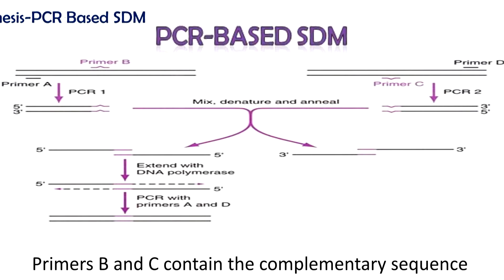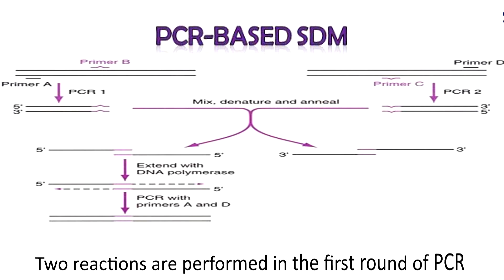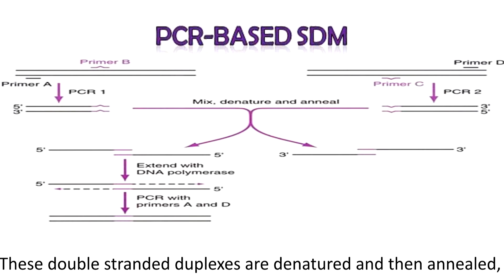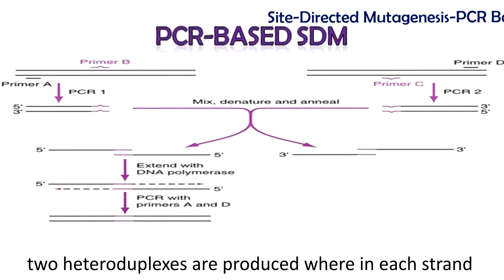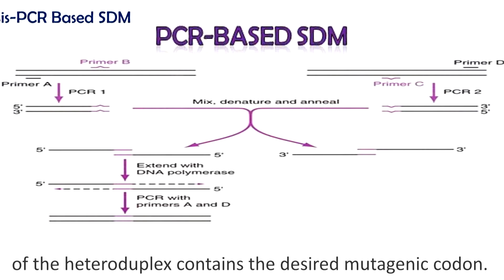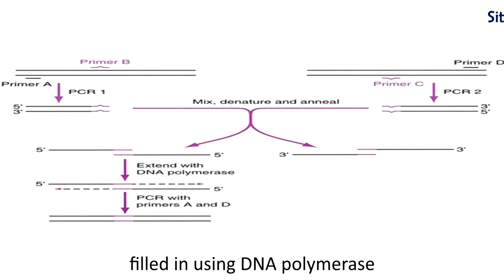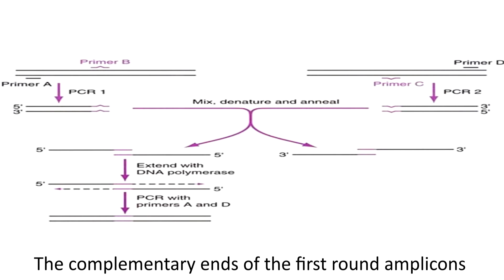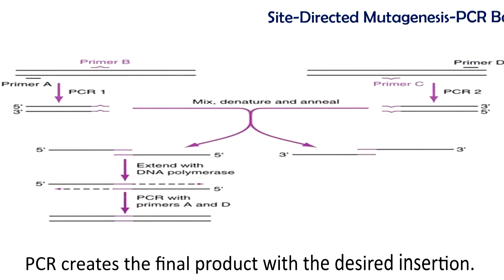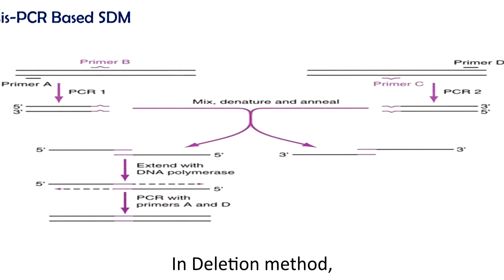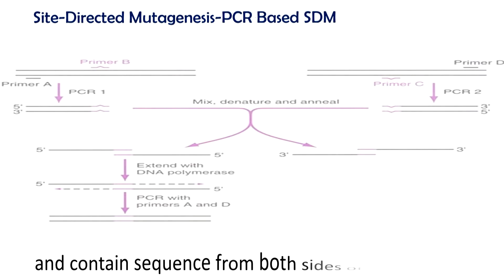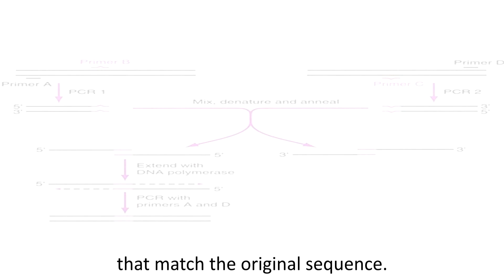In the insertion method, primers B and C contain the complementary sequence that will be inserted. Two reactions are performed in the first round of PCR using primer pairs A and B, and C and D. These double-stranded duplexes are denatured and then annealed. Two heteroduplexes are produced, wherein each strand contains the desired mutagenic codon. The overlapping ends of each heteroduplex are then filled in using DNA polymerase. The resulting amplicons are mixed with primer pair A and D for the second round of PCR. The complementary ends hybridize and PCR creates the final product with the desired insertion. In the deletion method, the difference is that primers B and C are located on either side of the sequence to be deleted and contain sequence from both sides of the deletion that match the original sequence.